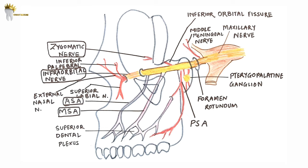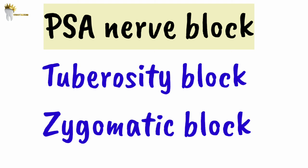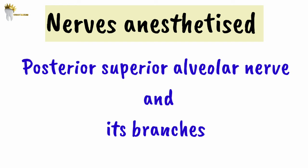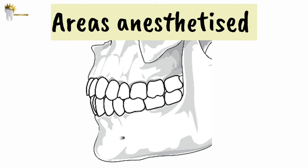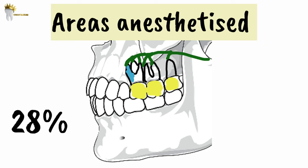The anatomy of the maxillary nerve is explained in detail in another video. The PSA nerve block is also known as the tuberosity block or zygomatic block. When we administer this block, the PSA nerve and its branches are anesthetized, causing anesthesia of the pulps of the maxillary third, second, and first molars. However, in 28 percent of patients, the mesiobuccal root of the maxillary first molar is not anesthetized.